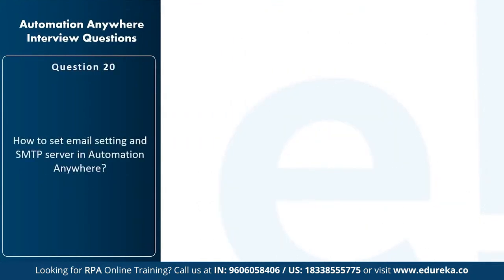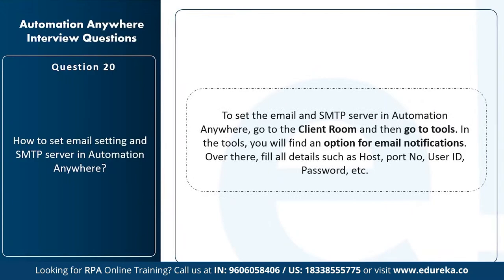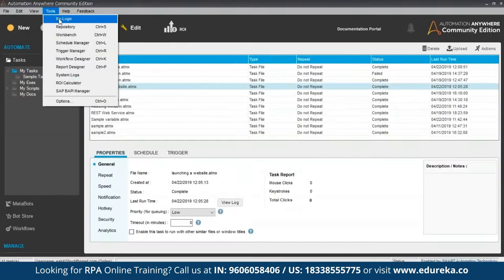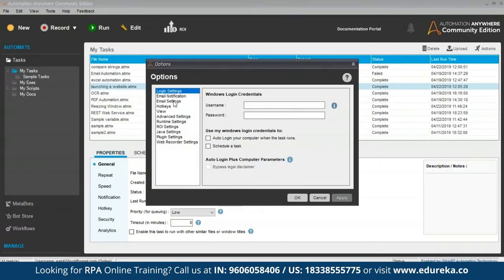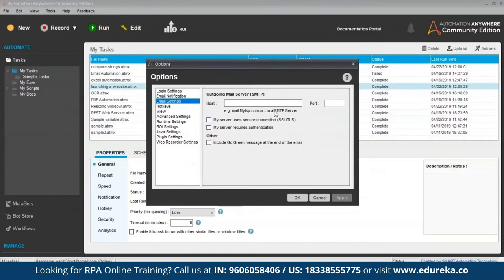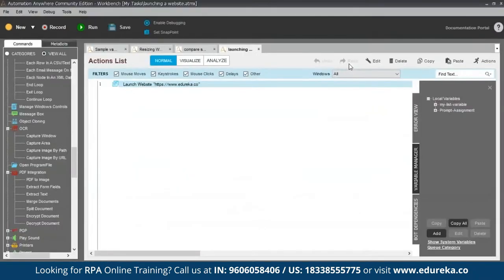Next question: how to set email settings and SMTP server in Automation Anywhere? Go to the client, then Tools > Options, and find Email Settings. Fill in the host name, port number, user ID, and password. I'll demonstrate: go to Tools > Options > Email Settings, mention the host and port number, and click OK. That concludes the tool-based questions section.